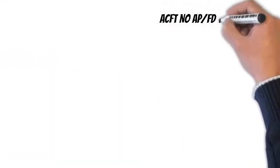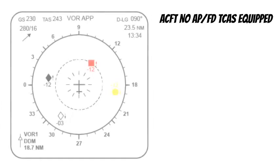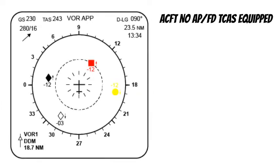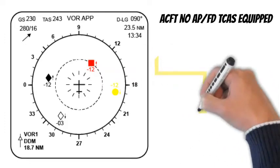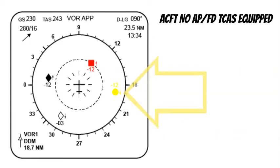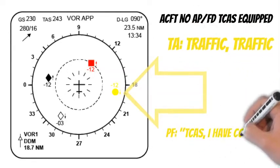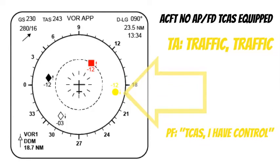Aircraft with no Autopilot Flight Director TCAS equipped: No Autopilot Autothrust Traffic Collision Avoidance System Procedure. If a Traffic Advisory, TA, is generated, the Pilot Flying, PF, announces TCAS, I have control. He should initiate no evasive maneuver only based on a TA.